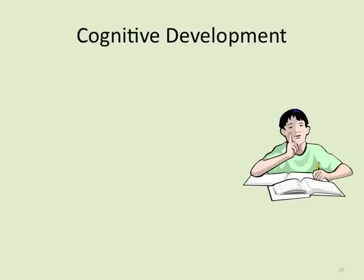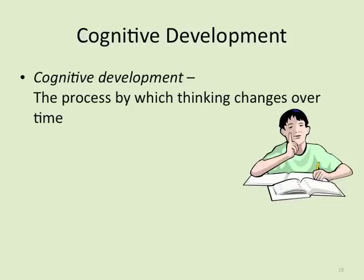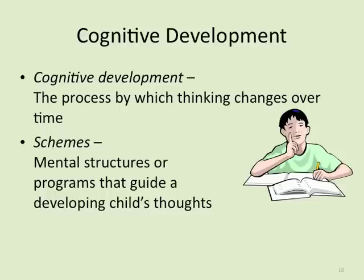During infancy, the baby's brain activity triples almost every three months. The capacity to think and the growth spurts are unprecedented — this is the fastest period of brain growth we experience. Cognitive development is the process by which thinking changes over time. At birth it's very simple; as we get older it becomes more complex. Schemes are the mental structures or programs that guide a developing child's thoughts.